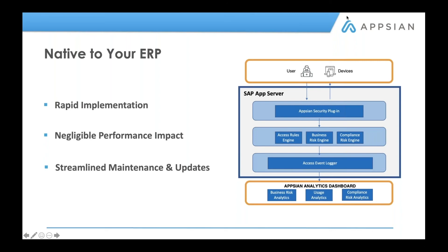From a performance point of view, we are an SAP certified partner, as Blake mentioned, so we fall within the performance overhead that must be complied with by vendor products — we are under the overhead mandated by SAP. Because we are an add-on, we can be installed on any of the ABAP servers: CRM, SRM, ECC, or S4. It should seamlessly integrate into the transaction business process and be able to enforce access control and business process controls.